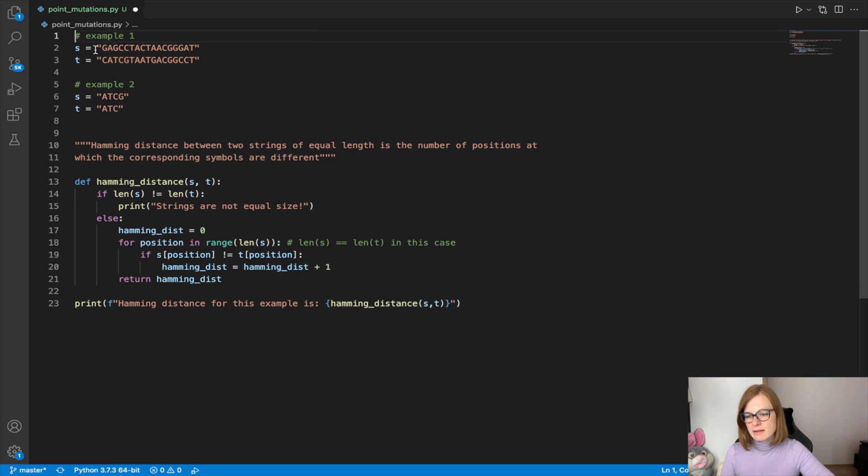So if we see in this example we already see that at position 1 the characters of these two strings are not the same. So we already see we have 1 point mutation. And if we go position by position until the end for these two strings we expect that there is going to be 7 point mutations.